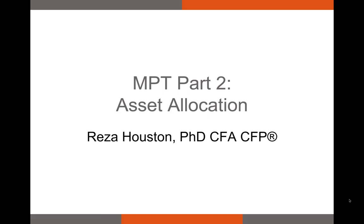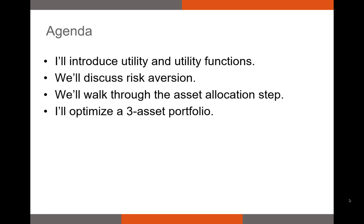Welcome back to our fourth and final video discussing portfolio optimization. In the previous videos we talked about the statistics we need to know and we introduced modern portfolio theory. In this video I'm going to discuss the second and final part of modern portfolio theory, the asset allocation step. I'll start off talking about utility and utility functions and then risk aversion. Then we'll walk through the asset allocation step and optimize a three asset portfolio containing two stocks and a T-bill.